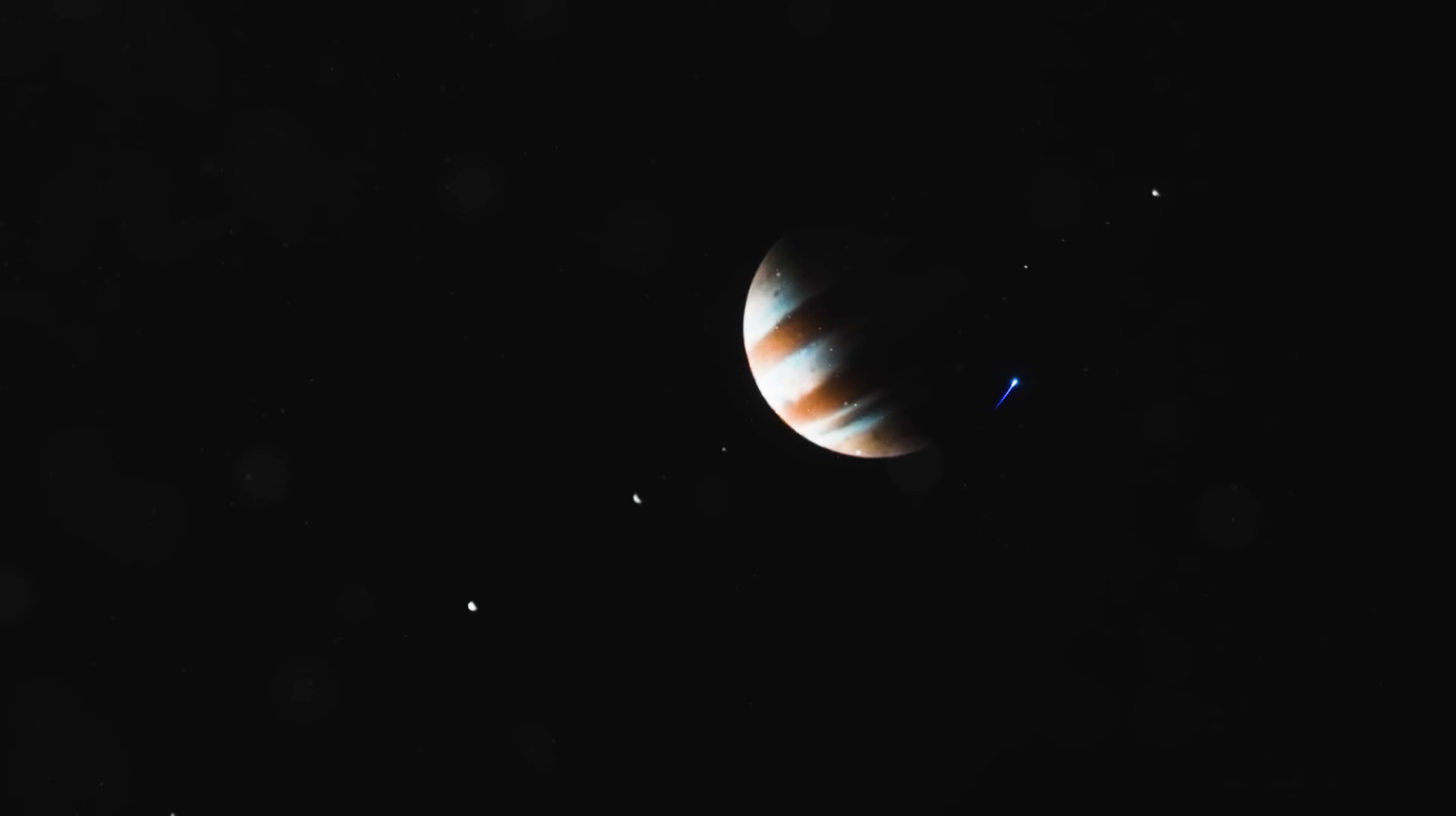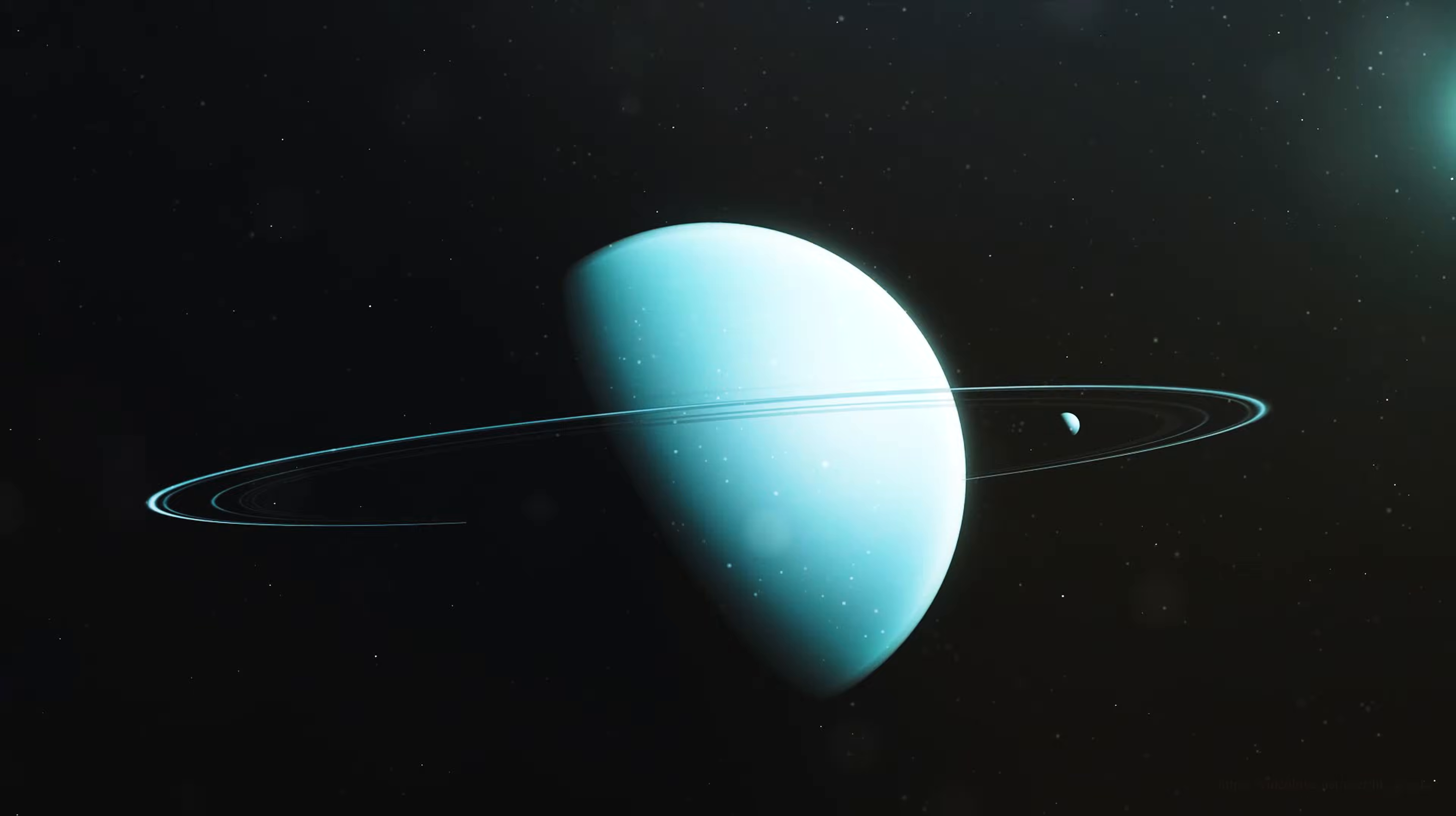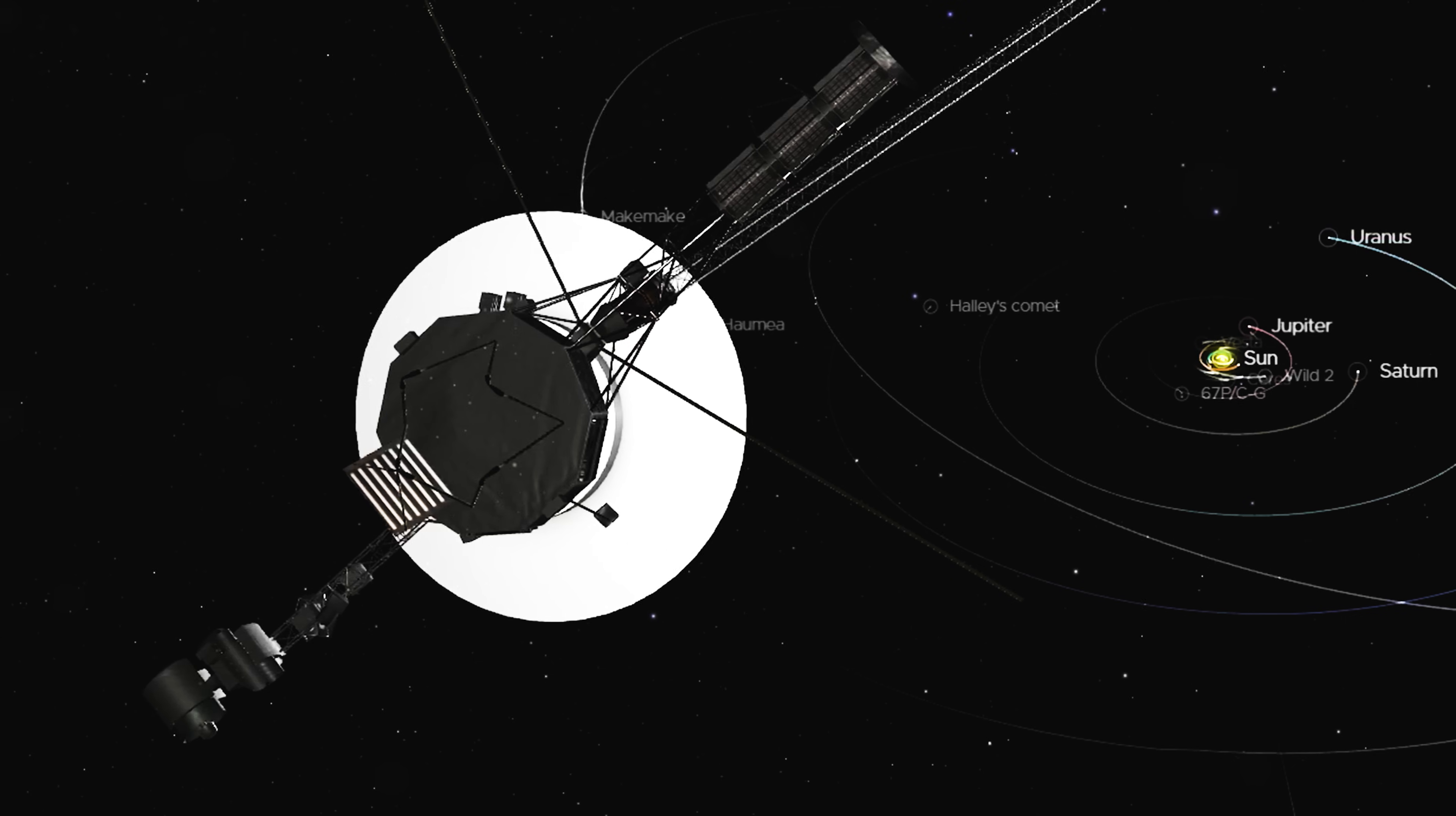But Voyager didn't fade, it kept going. It showed us Jupiter's oceans of storms, the churning volcanoes of Io, Europa's fractured ice hiding a possible ocean world beneath, Uranus's tilted rings, Neptune's deep blue haze, Triton's cryovolcanic geysers. Voyager rewrote humanity's understanding of the outer planets, and then it kept going.